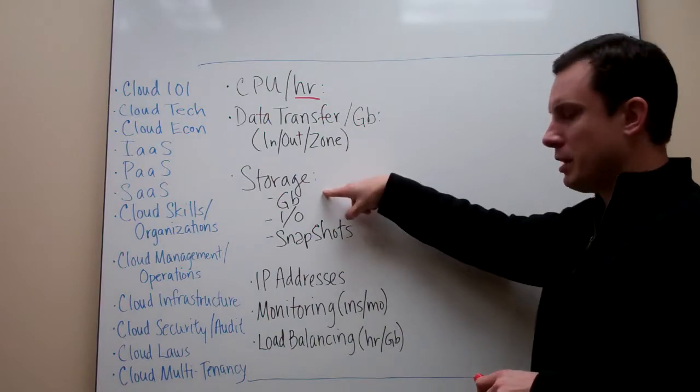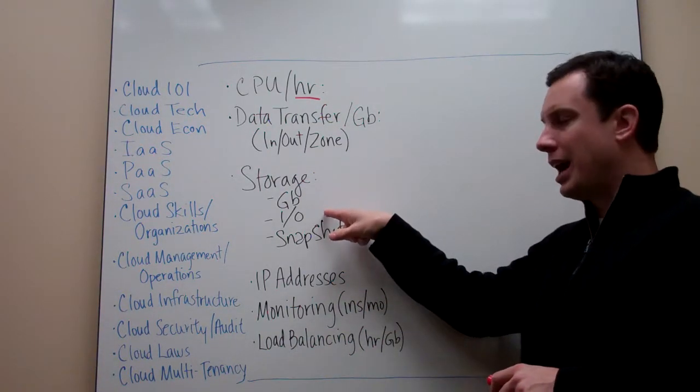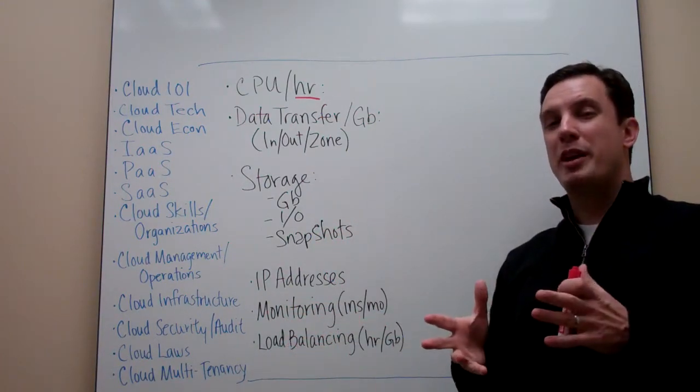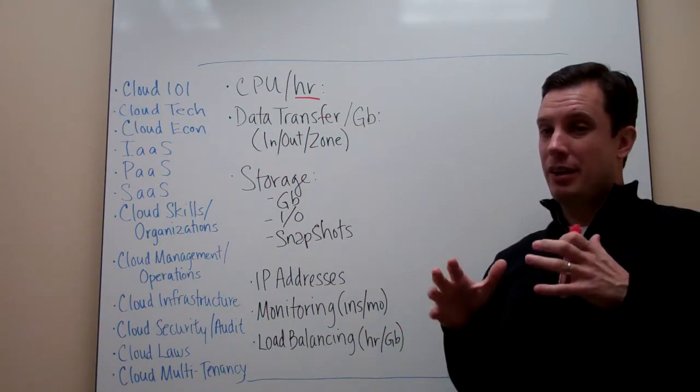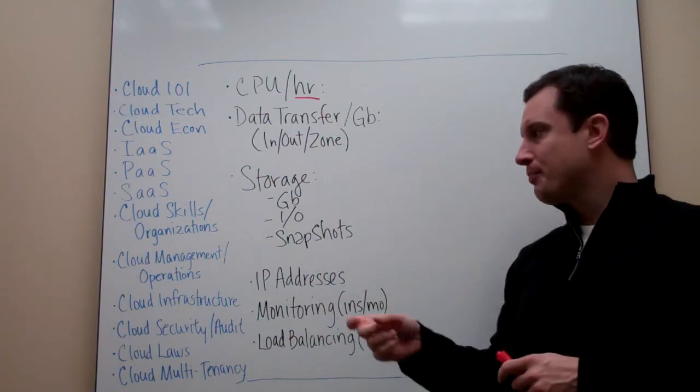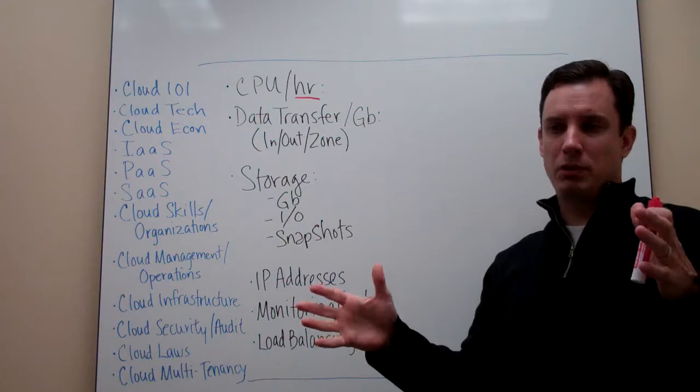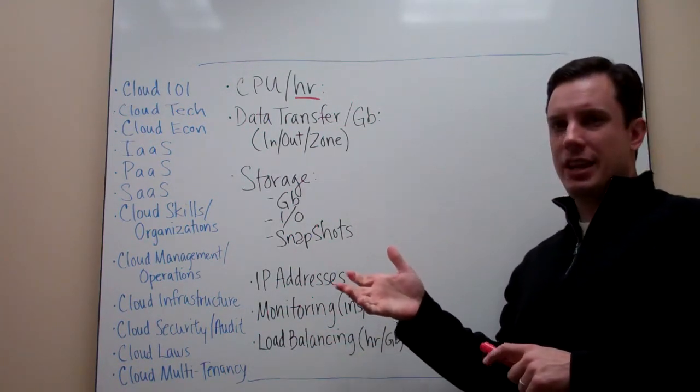They're charged per gigabyte of raw space. It's charged by IO, hundreds of IO, thousands of IO, millions of IO. But what that means is as an application person, you need to be thinking about how much IO does this application generate, both inbound and outbound. And then it also has the option to charge you to do snapshots of your application, of your data. So I have to be aware of all of these things.